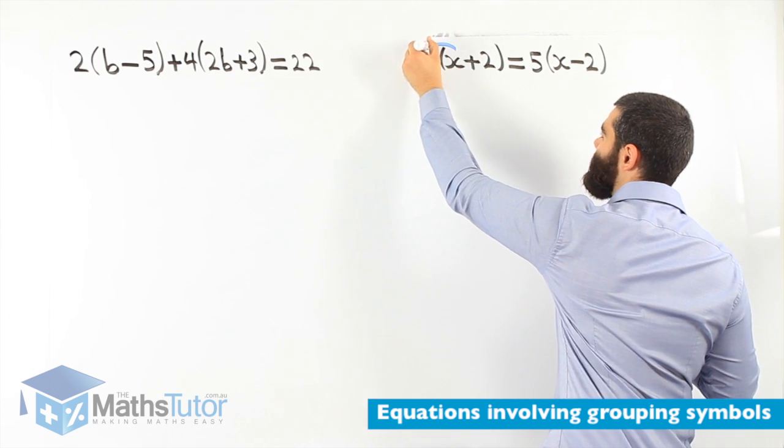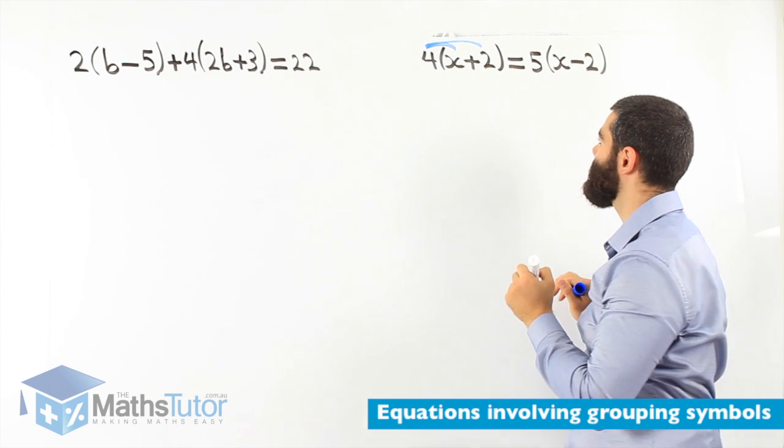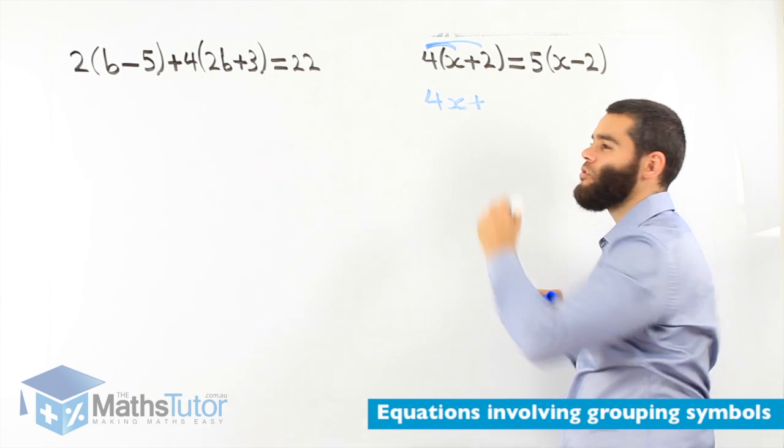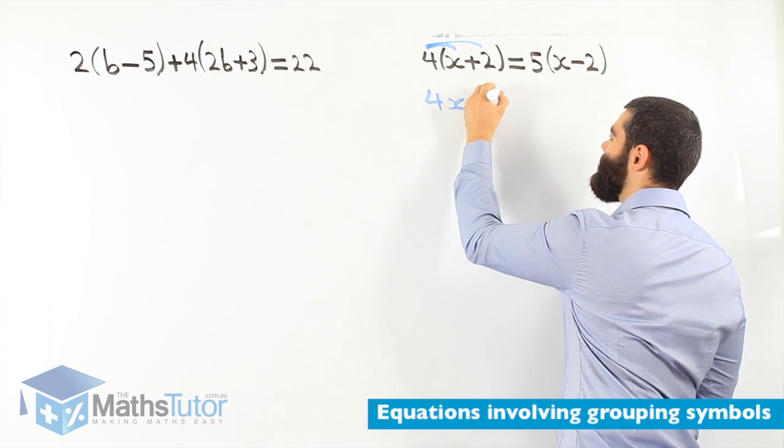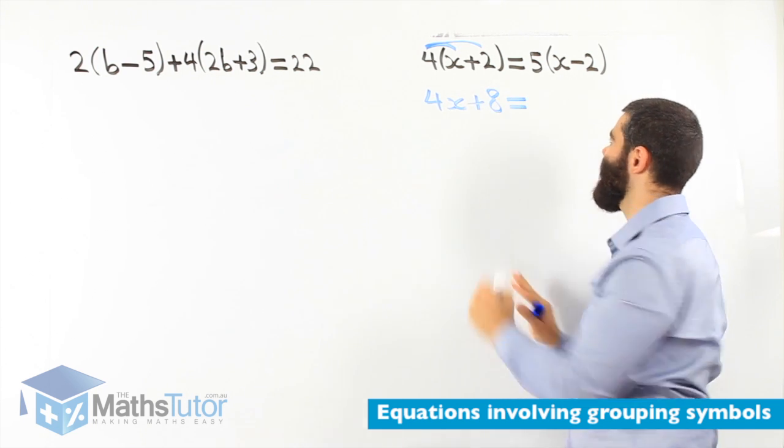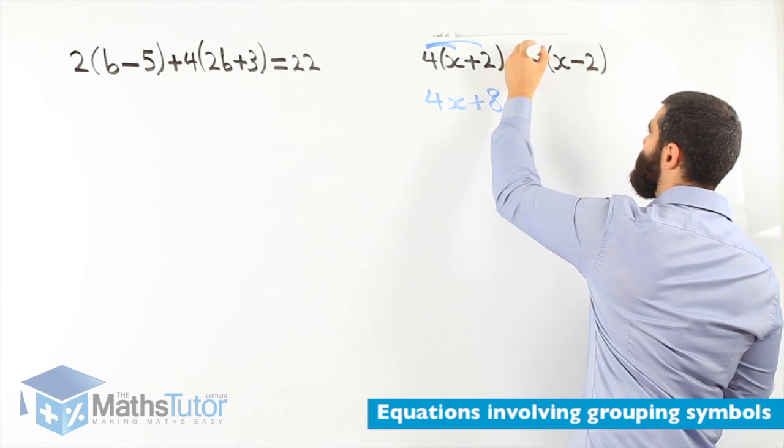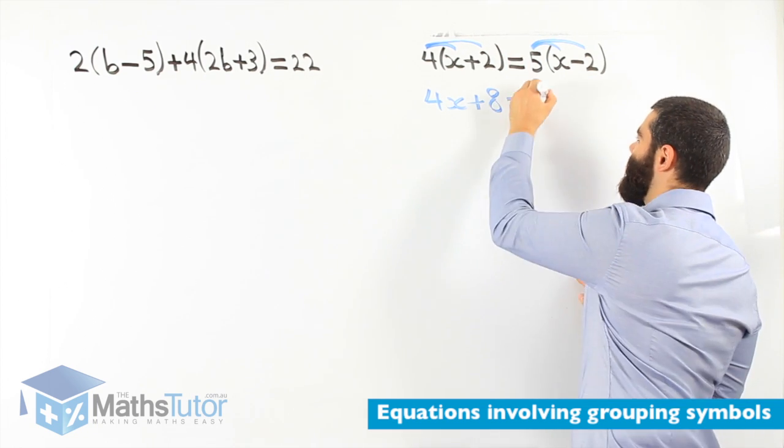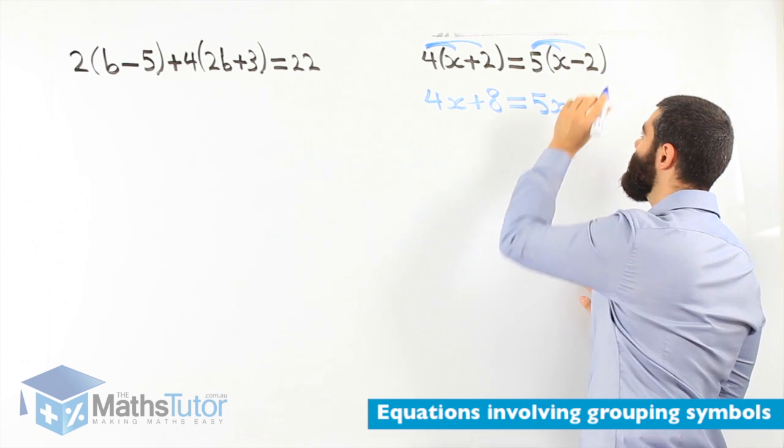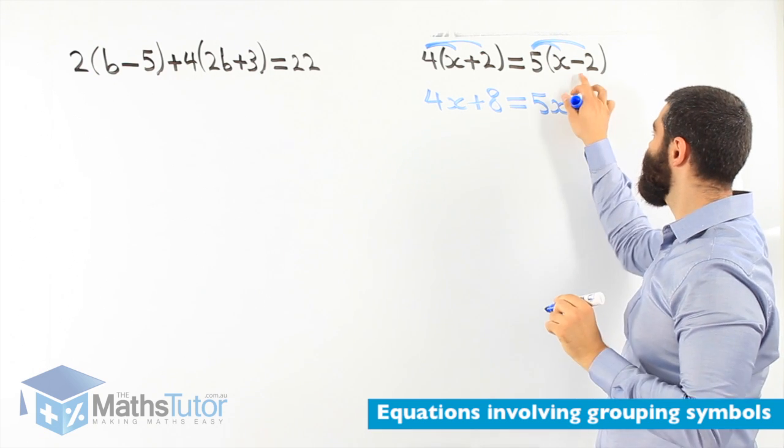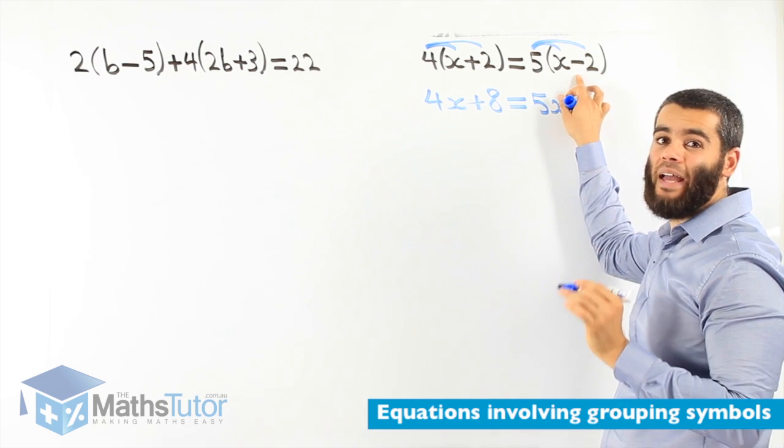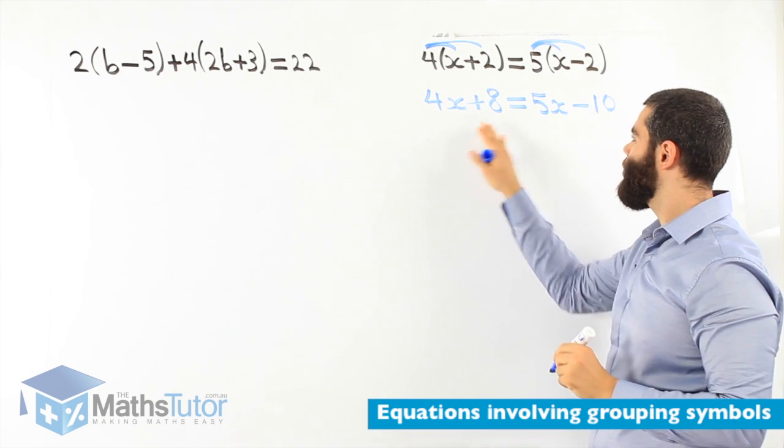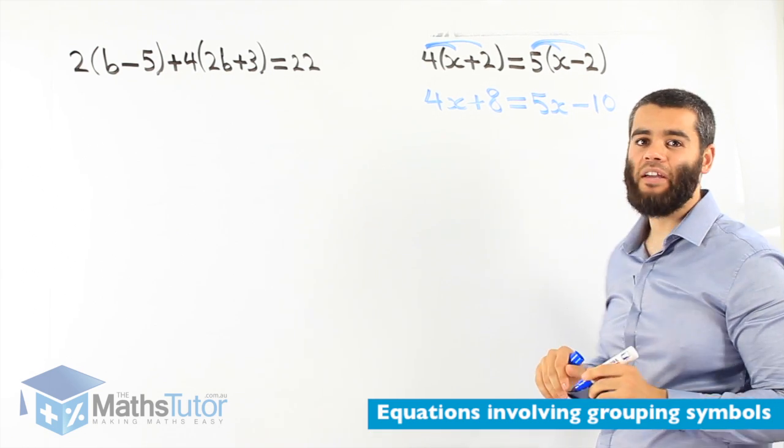4 times x and 4 times positive 2. So, we have 4x plus 4 times 2 is 8. Now, we're going to expand the second one as well. 5 times x and 5 times negative 2. So, we have 5x, 5 times negative 2. Very important that you can see the negative and you identify it's going to be a negative answer. 5 times negative 2, negative 10.